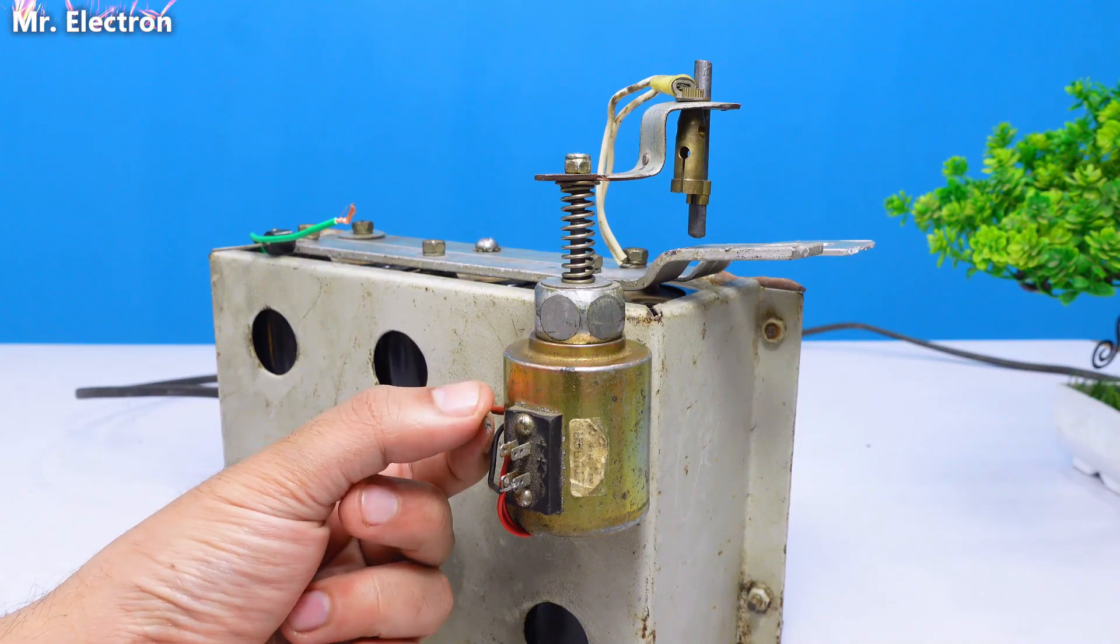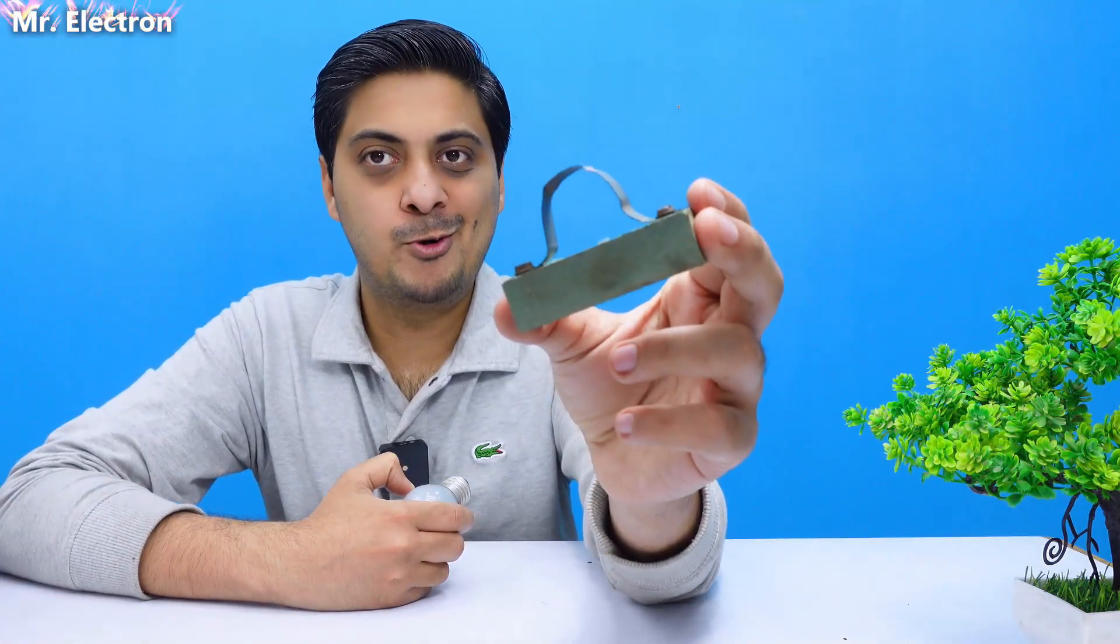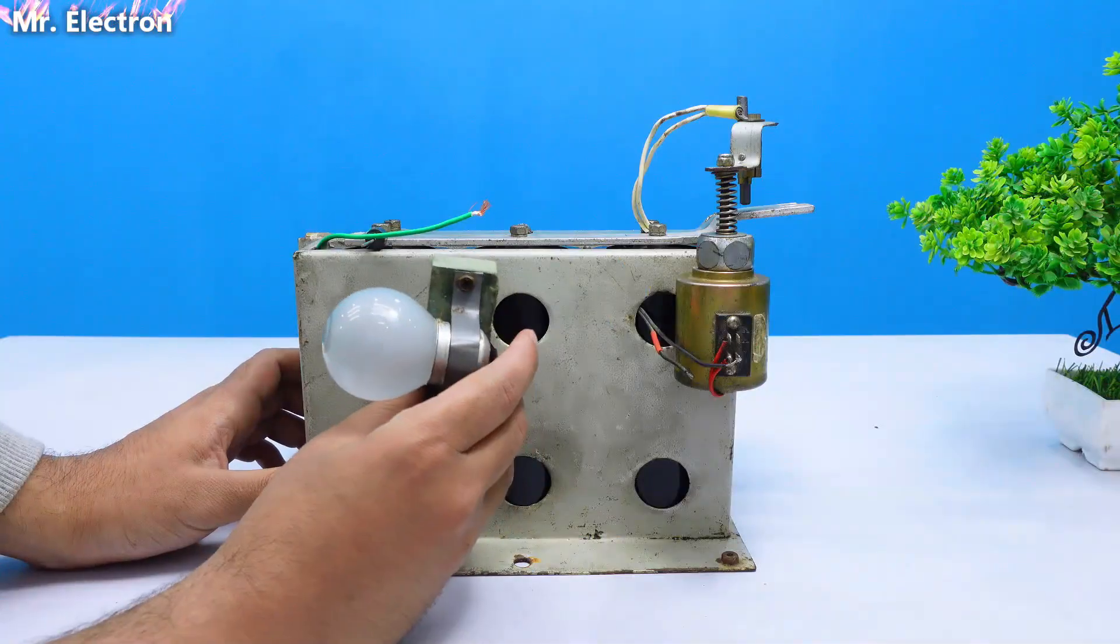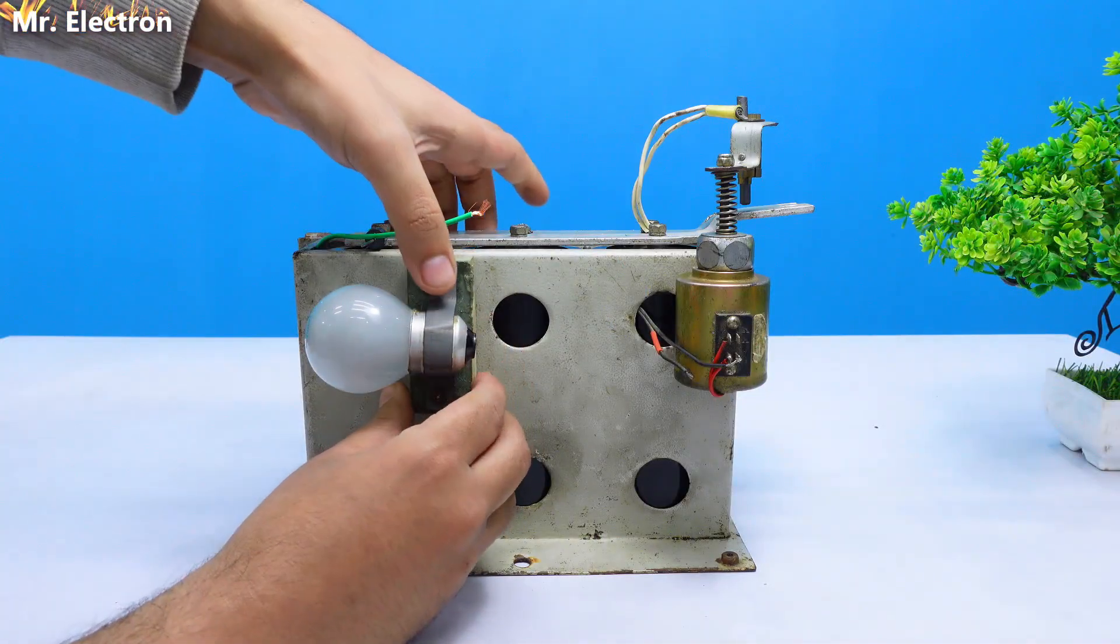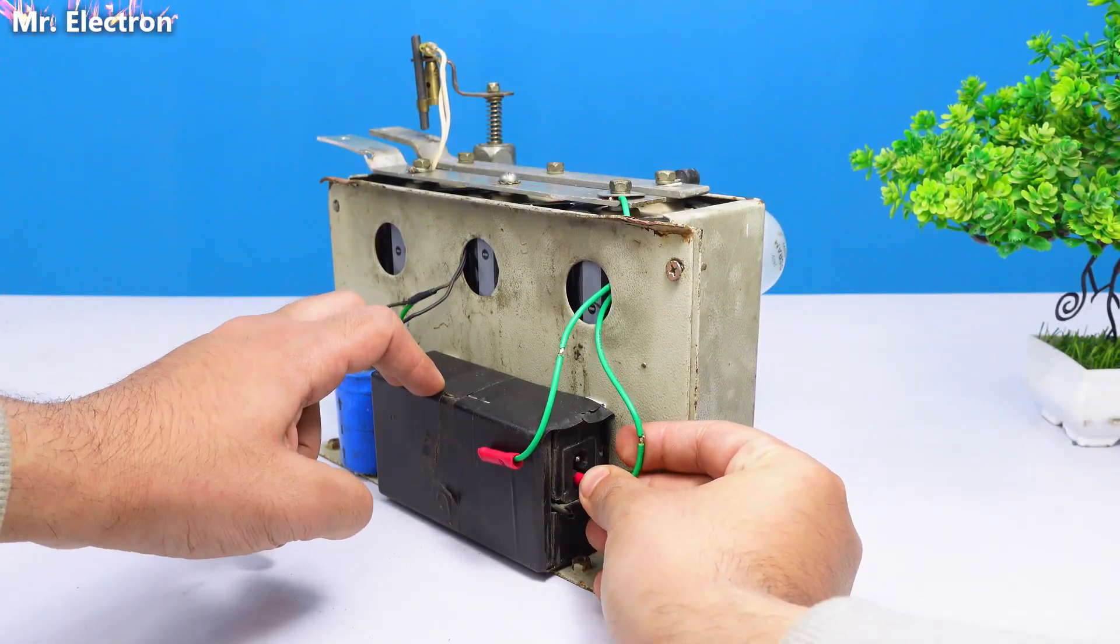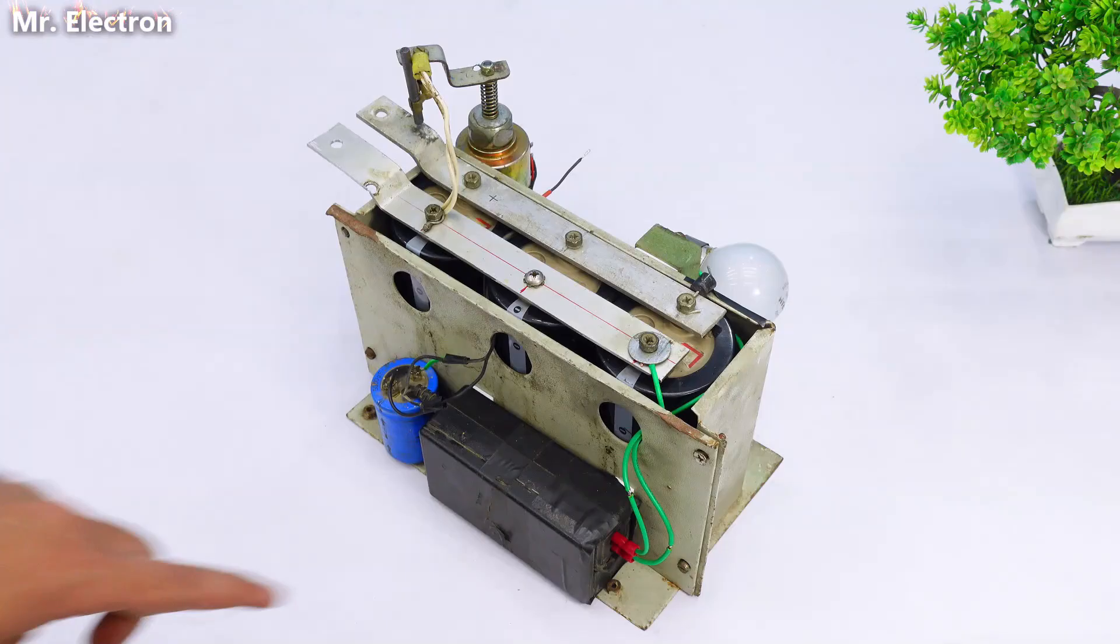Finally I've made this simple bulb holder and this is a 220 volts 60 watts bulb. Next I'm going to use this double-sided tape to stick this bulb as shown. So here I'm going to connect the pinouts to the input of the printer power supply.